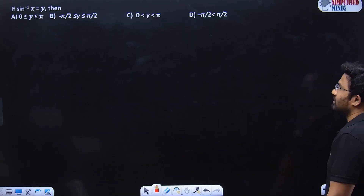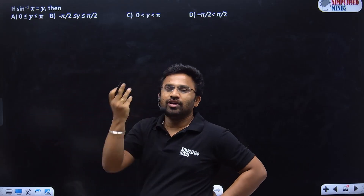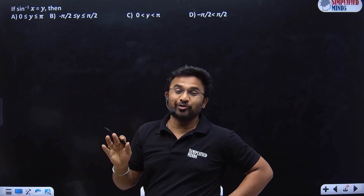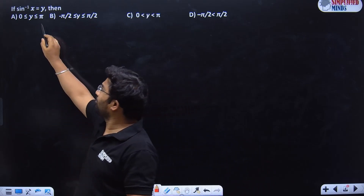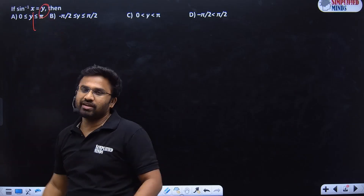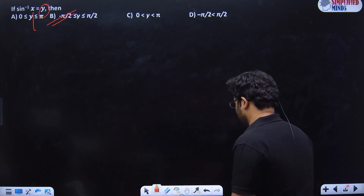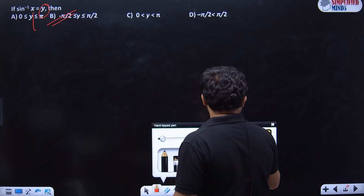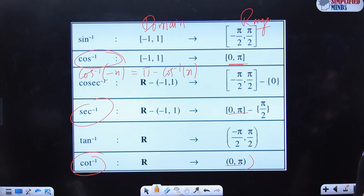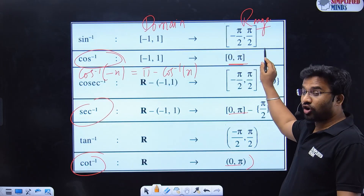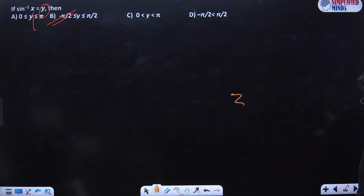Let's go to the first MCQ. It's very simple — this question is used at district level. For sin⁻¹(x) = y, we are asking what y varies over. The output y is the range of sin⁻¹, which goes from −π/2 to +π/2, and it is inclusive: −π/2 ≤ y ≤ π/2.